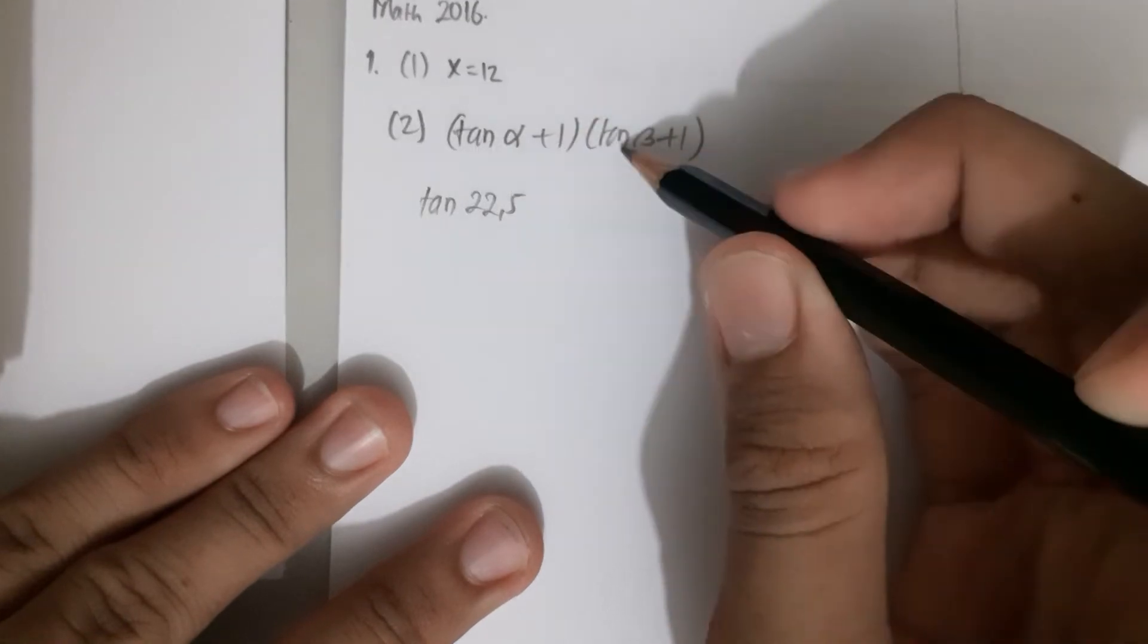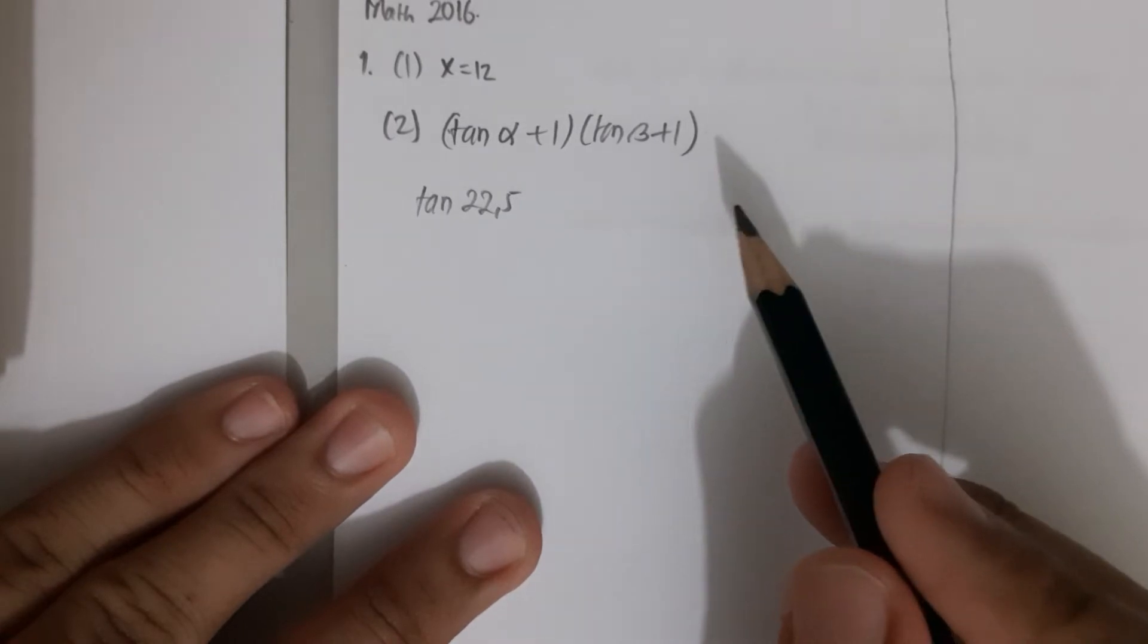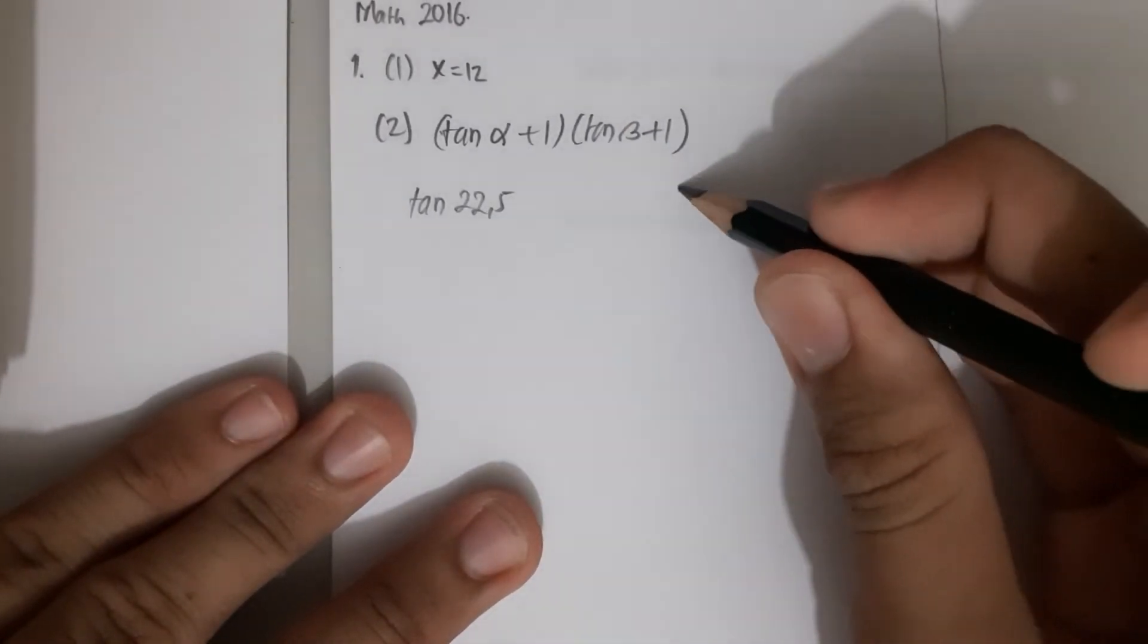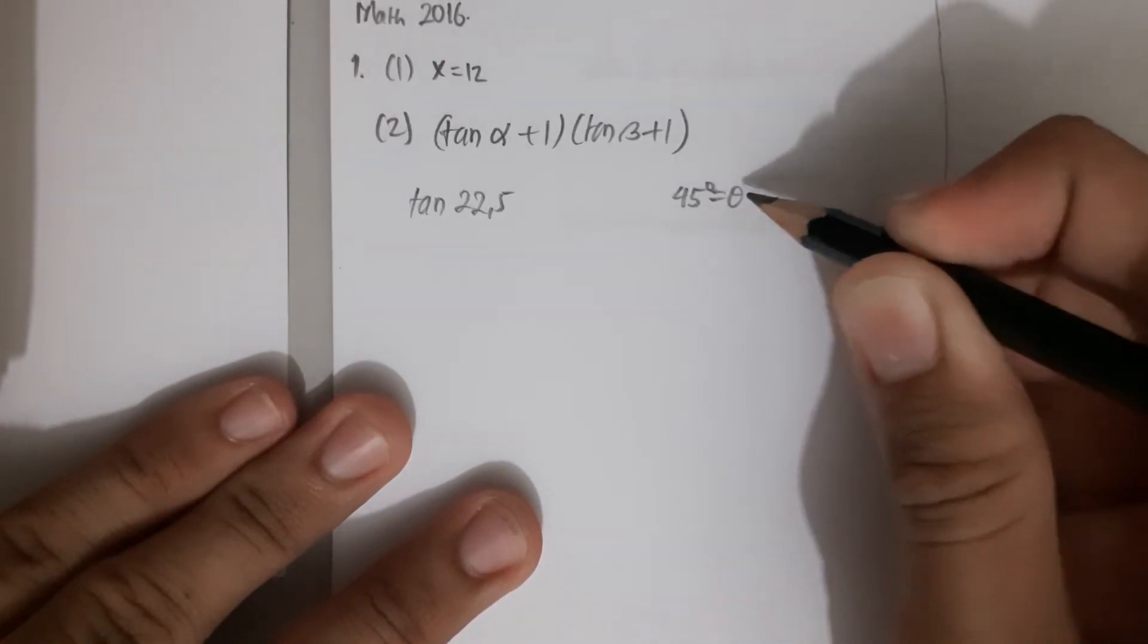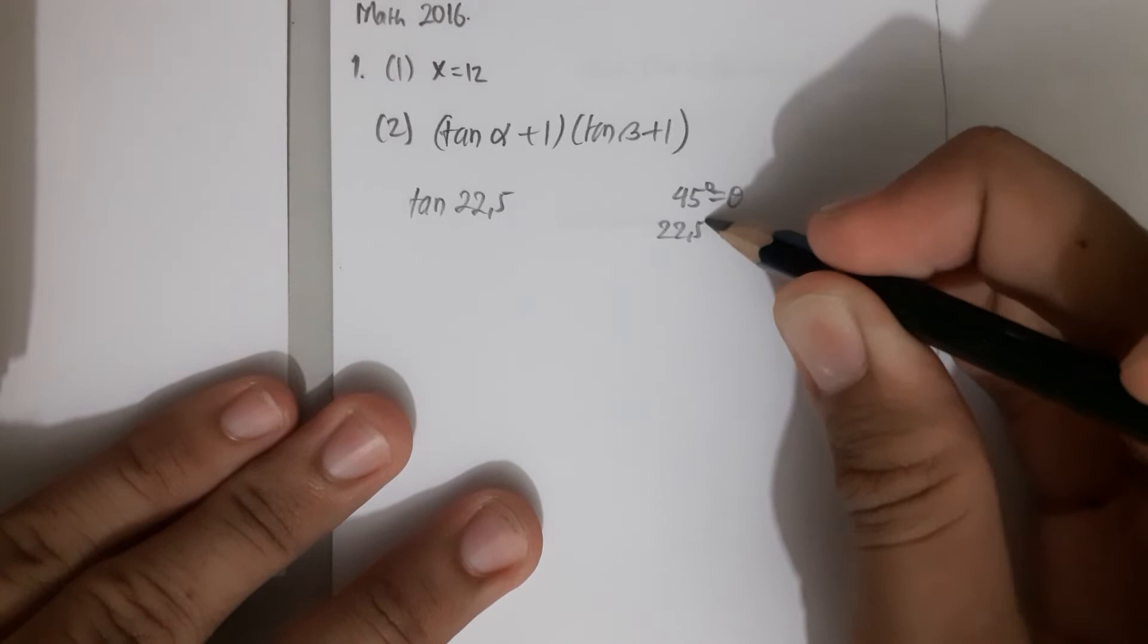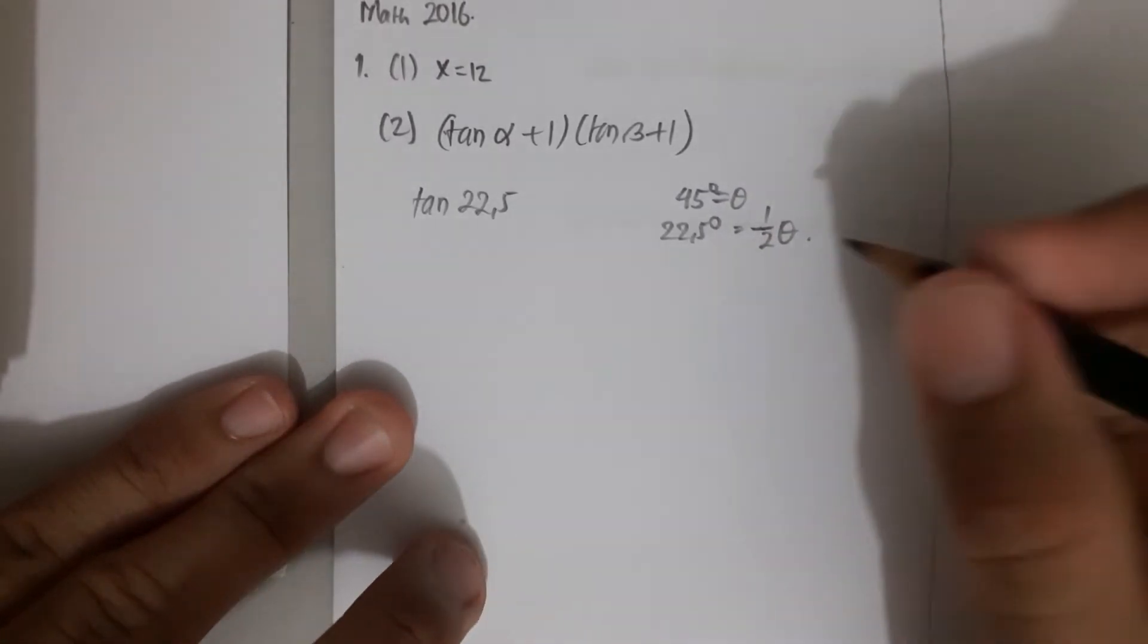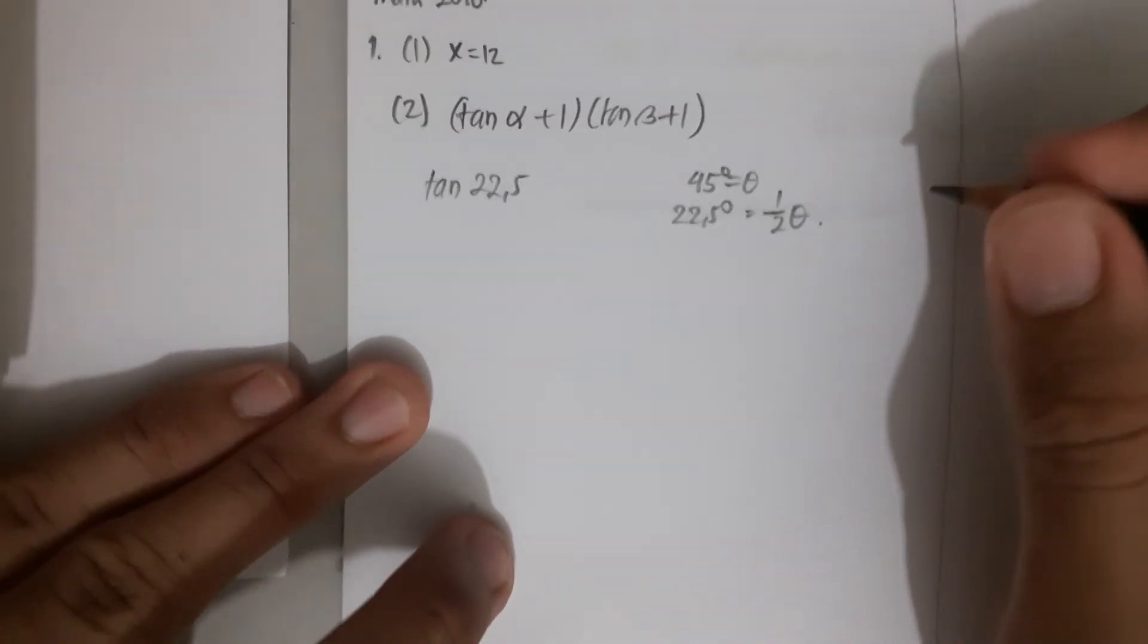If we assume that 45 is θ, then 22.5 is θ/2. So half of 45 is 22.5.